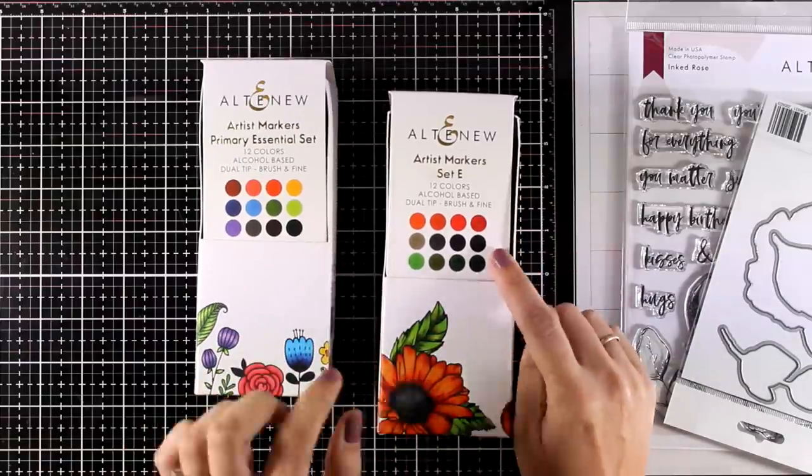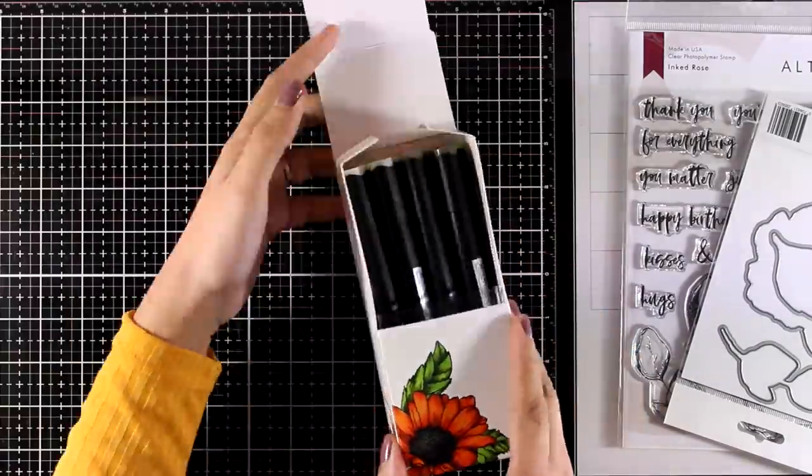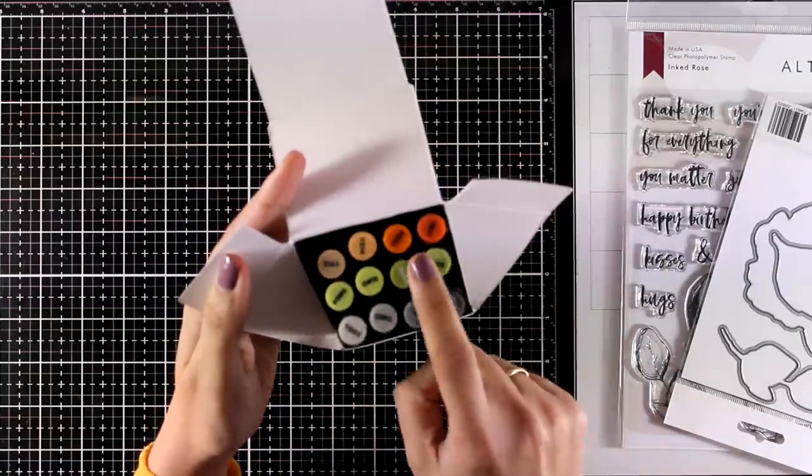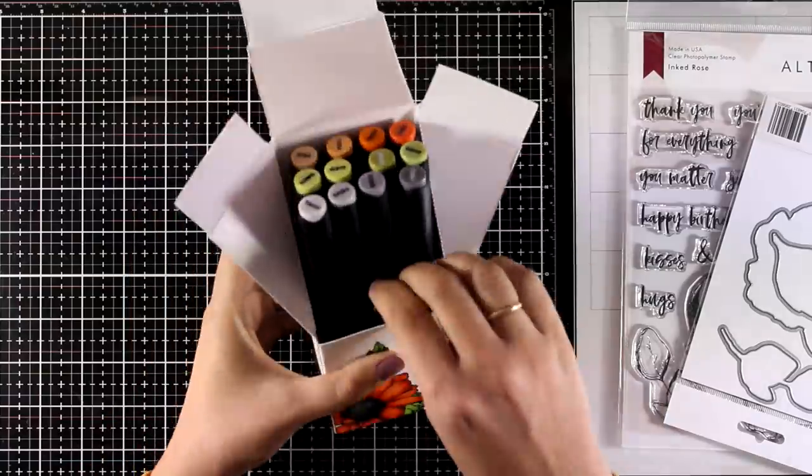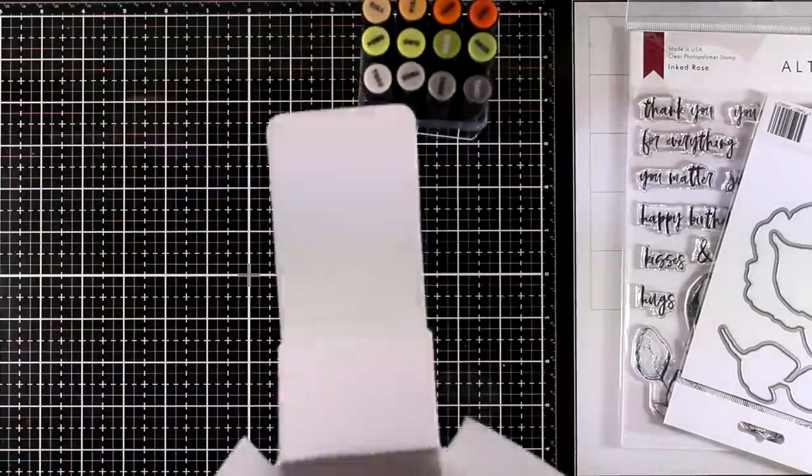So today I'll be using my alcohol markers to color them and there have been released a couple of new sets by Altenew and you can see here the colors. For today I will be using the one with the oranges and the greens.